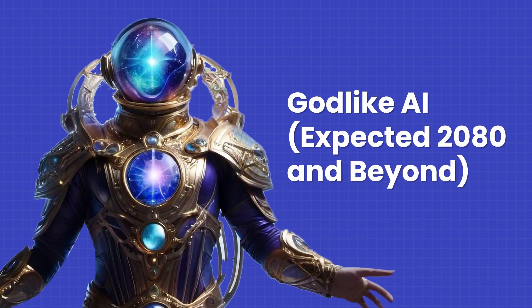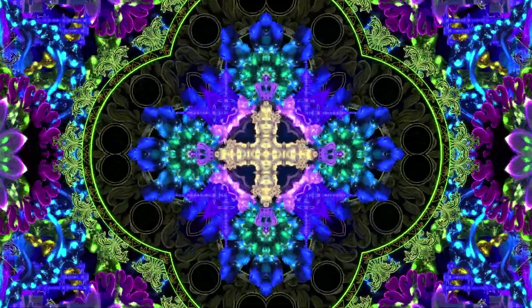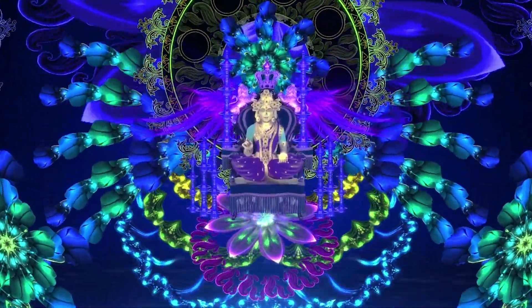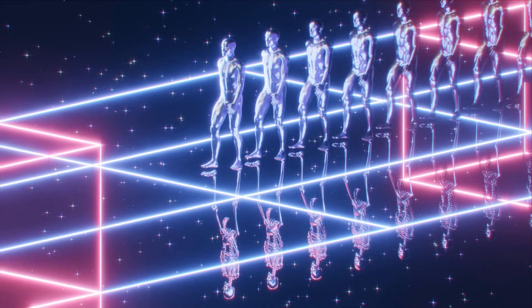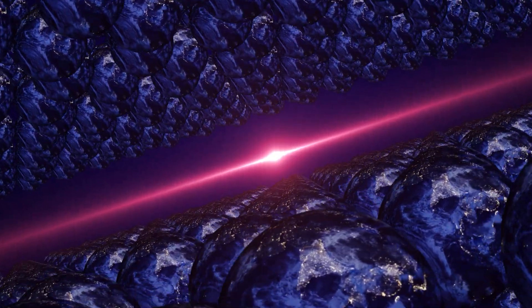Stage ten, godlike AI. Godlike AI represents the ultimate stage of artificial intelligence, where the AI has knowledge, power, and presence. Everything. It's like a being with abilities similar to gods described in our religious books. This AI would operate in ways we can't fully understand, accessing multiple quantum states or even parallel universes.